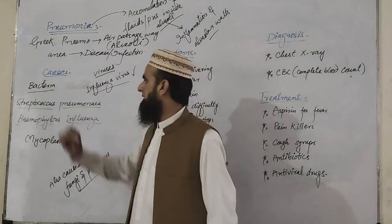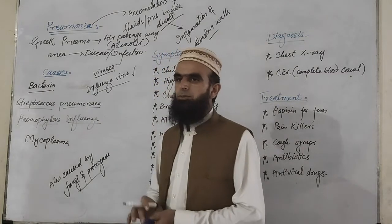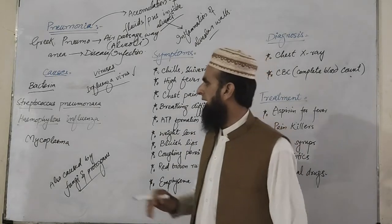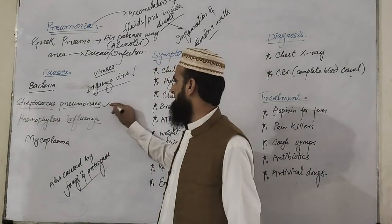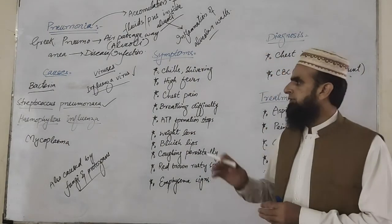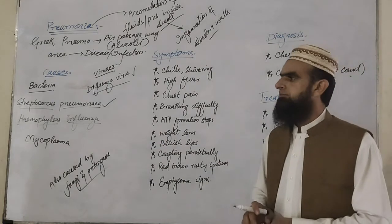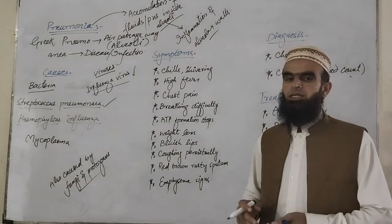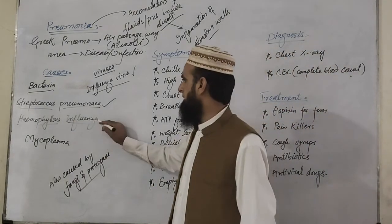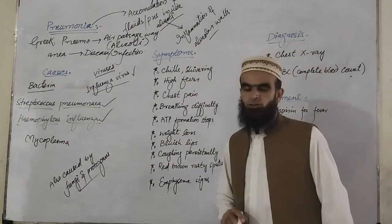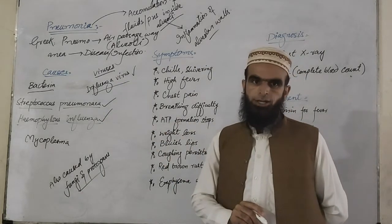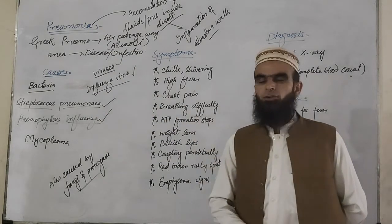Pneumonia can also be caused by different kinds of bacteria. Different bacterial strains are involved in causing pneumonia. There may be Streptococcus pneumoniae, which is the main cause of pneumonia — a special kind of bacteria involved in causing the disease. Similarly, another one is Haemophilus influenzae, a bacteria which is also involved in the cause of pneumonia.